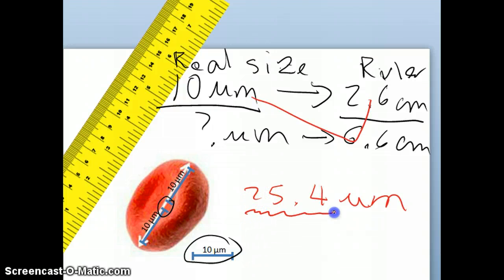Whenever you arrive at an answer, just double check, does it make sense? This number, 2.6 is smaller than 6.6, therefore, 10 is smaller than 25.4. Yeah, it looks about right.